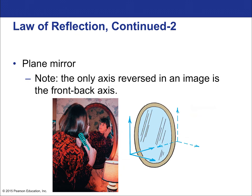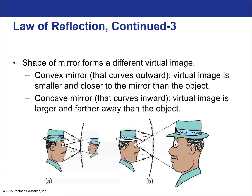For a plane mirror, the only axis reversed in an image is the front-back axis. The apparent left-right reversal is actually how our minds interpret the front-back flip — because we have a strong neural sense of up and down, we reinterpret it as left-right reversal rather than front-back. The actual reversed axis is only the front-back axis.